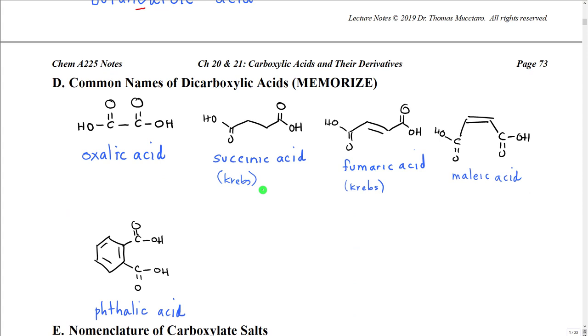There are several common names of dicarboxylic acids that you should memorize because these are actually quite important in biological chemistry. The first of these is the smallest dicarboxylic acid we can have, and it is called oxalic acid. The next one is the four-carbon dicarboxylic acid that we actually named the IUPAC name above. This has a very commonly used common name: succinic acid.